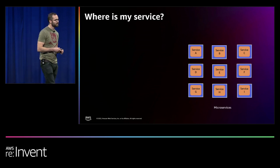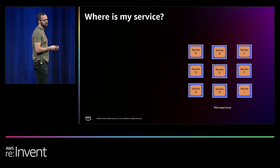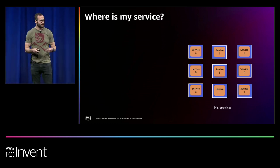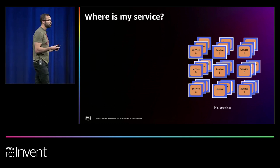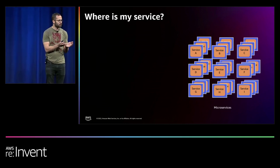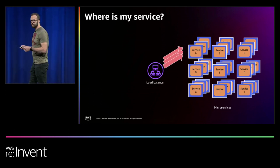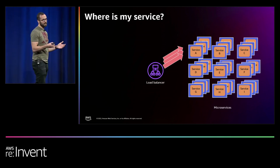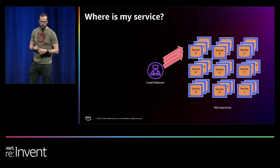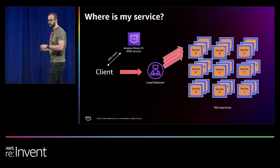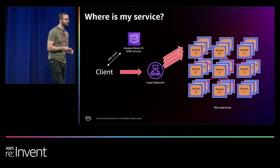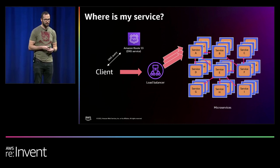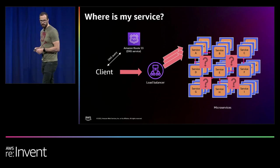Now let's look at a more complicated scenario. We still have multiple services, but now they're microservices — each possibly running a different runtime, like Java, Go, or Python, on different compute, whether containers or VMs. They'll also have multiple instantiations for high availability. But now each compute hosting each service has multiple endpoints, and these services need to use the network to communicate with each other. They have different IP addresses and need to figure out where each one is.